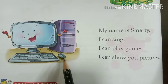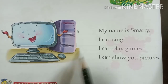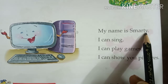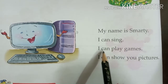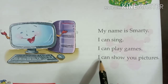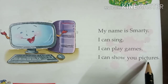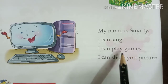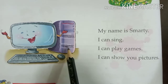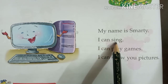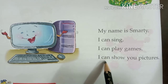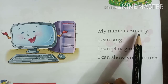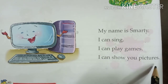In the next picture, you can see a computer. What is the name of this computer? My name is Smarty — S-M-A-R-T-Y. I can sing. I can play games. I can show you pictures. Smarty can sing, play games, and show you pictures. This computer's name is Smarty. He is smart — he can do so many things for you.